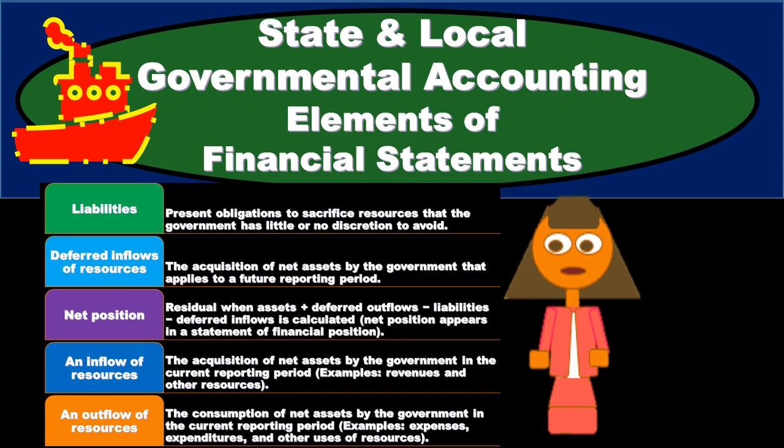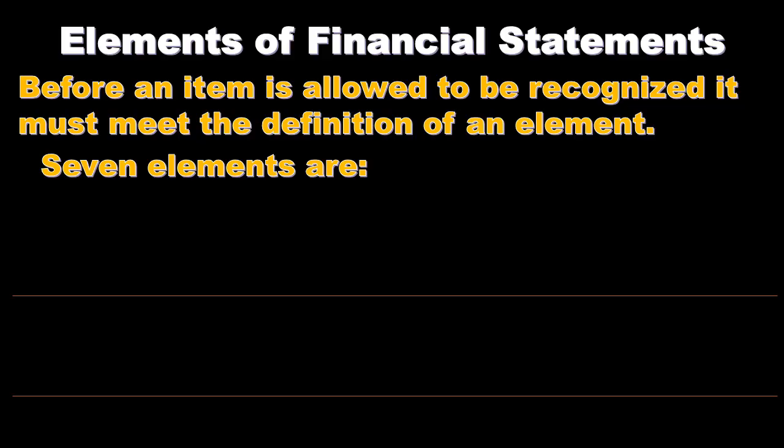In this presentation we will discuss state and local government accounting elements of financial statements. Before an item is allowed to be recognized it must meet the definition of an element. These elements will look familiar — they basically break out the balance sheet and income statement type accounts, considering the accounting equation: assets, liabilities, equity, and then the income statement equivalents of revenue and expenses. Let's list out those elements and define them.